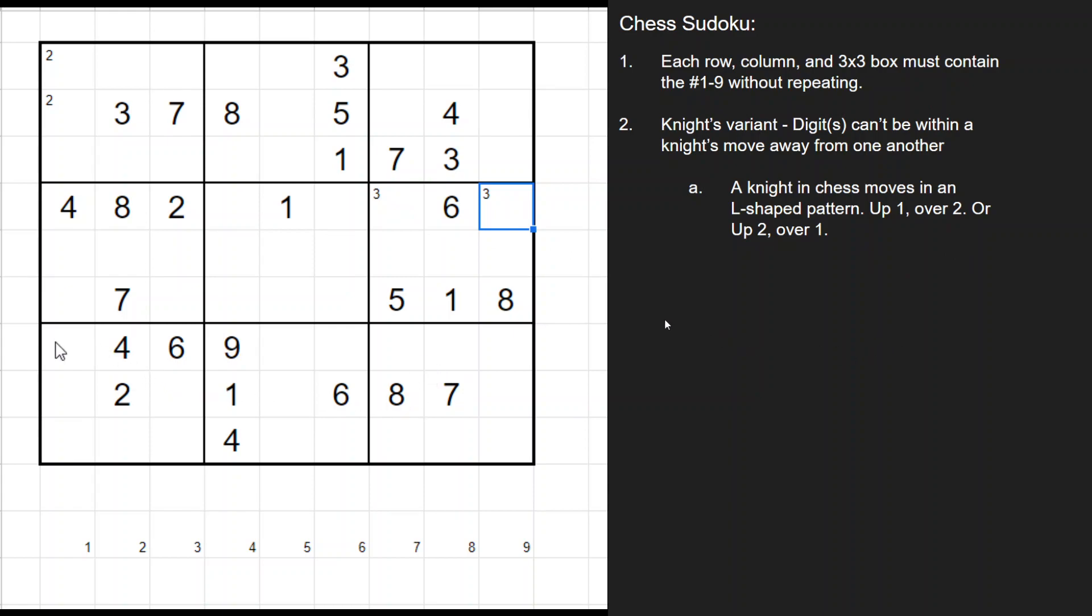Now if we look at 4s, 4s we're going to be able to solve pretty easily. We can look here. There's a 4 missing in this bottom right box, so we can pencil that in. And then we look at the 4s in that column and that column. That just leaves these two cells here. But again, we look at this 4, Knights move away down 2 over 1. It can't be in this cell. So that only leaves this middle left cell.